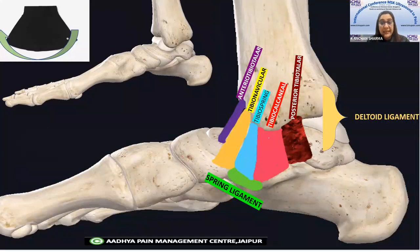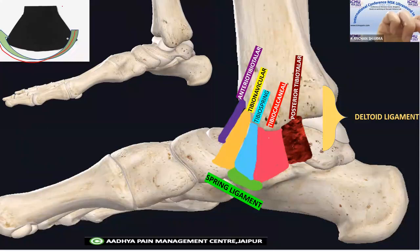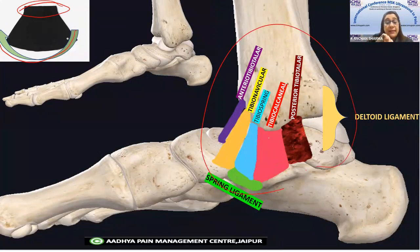To remember the medial ligaments, imagine a lady wearing a skirt and you have to go all around that skirt — this portion of the skirt represents your medial ligaments. When coming to the medial ligament, this whole complex is called the deltoid ligament.